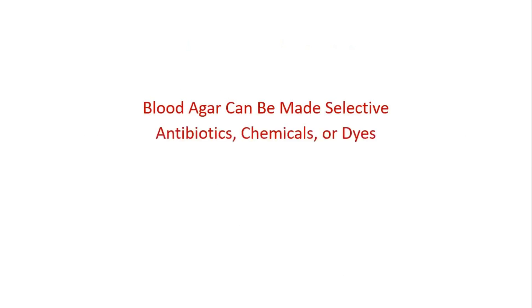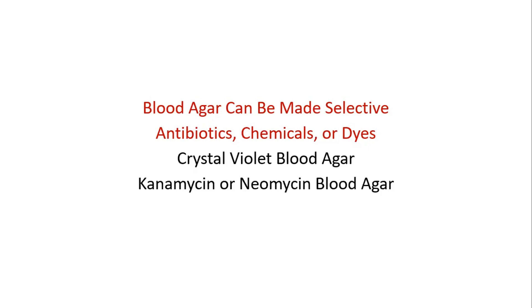Blood agar can be made selective for certain pathogens by the addition of antibiotics, chemicals, or dyes. Examples include crystal violet blood agar to select Streptococcus pyogenes from throat swabs, and kanamycin or neomycin blood agar to select anaerobes from pus.